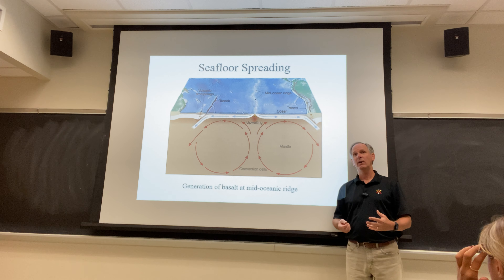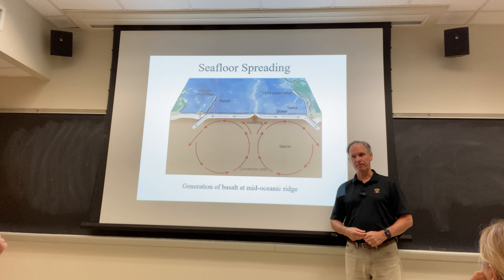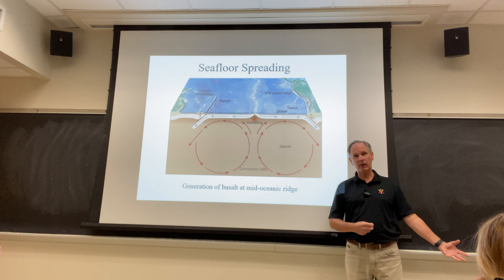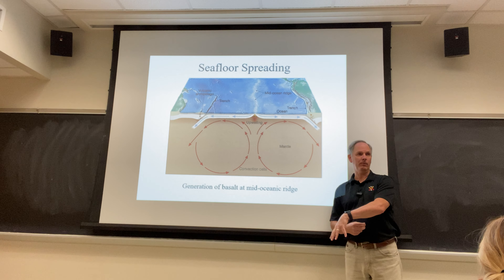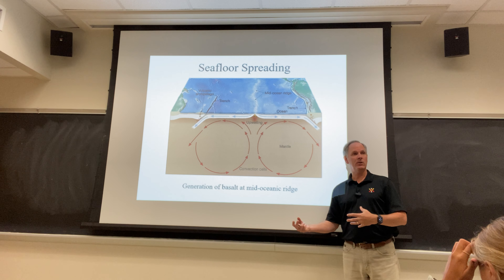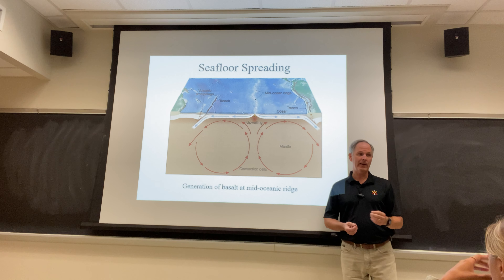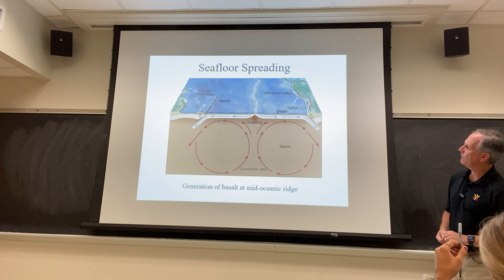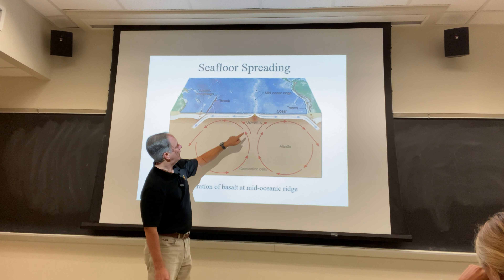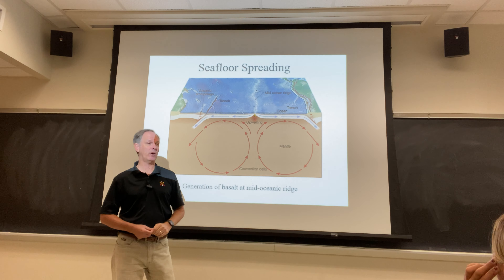Seafloor spreading is a process of plate tectonics we now understand in great detail — we can measure the rate and see it happening. So fast-forwarding to today: along a mid-oceanic ridge, the crust is being pushed up from below. The white stuff here is called oceanic crust. Oceanic crust is a dark, dense rock called basalt, made up of iron and magnesium and elements with many protons in their nuclei, which makes it heavy.